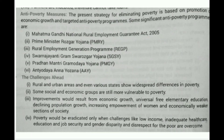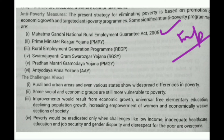Anti-poverty programs based on the Mahatma Gandhi National Law and Employment Guarantee Act 2005 are the most important. Others include Prime Minister Rozgar Yojana, Rural Employment Generation Program (REGP), Sponge Gram Swarozgar Yojana, and Pradhan Mantri Gram Sadak Yojana. These are the anti-poverty measures used by the government to reduce poverty.